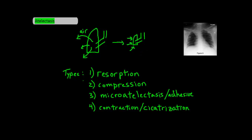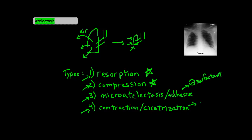The major types of atelectasis include resorption atelectasis, compression atelectasis, micro atelectasis or adhesive atelectasis, and finally contraction or cicatrization atelectasis. The most important ones to know are the first two, resorption and compression atelectasis, so these are the ones we're going to talk most about. Just know that micro atelectasis is basically a loss of surfactant, and contraction atelectasis is due to fibrotic changes in the lung that cause poor expansion.